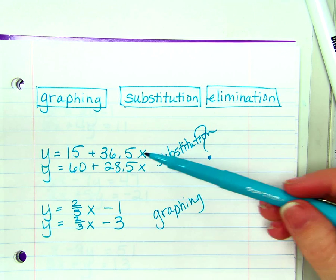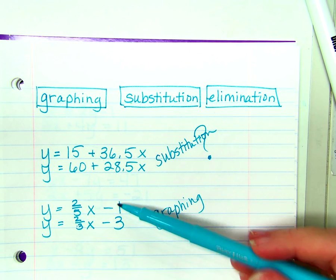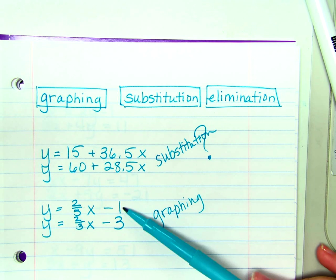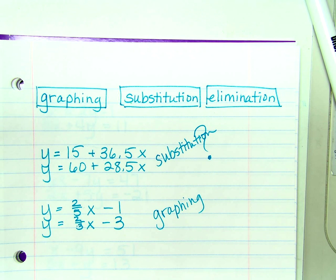So, I would solve this first one by substitution and the second one by graphing. Because, like I said, these are nice slopes, these are relatively low y-intercepts. They would be simple to solve by graphing.